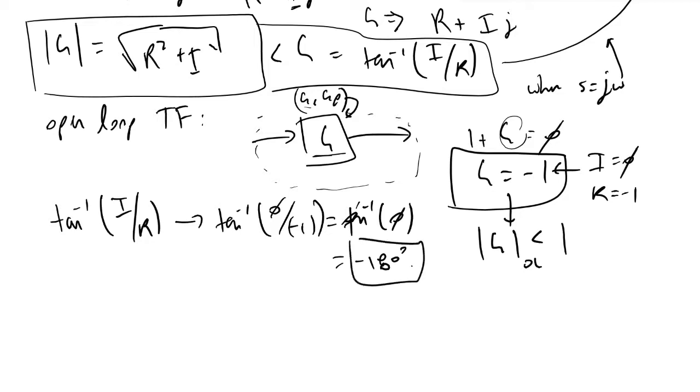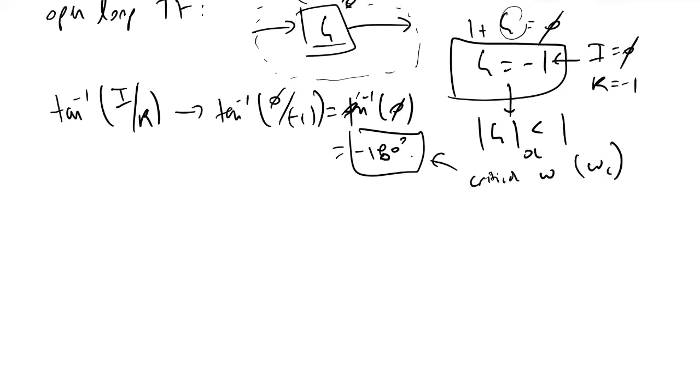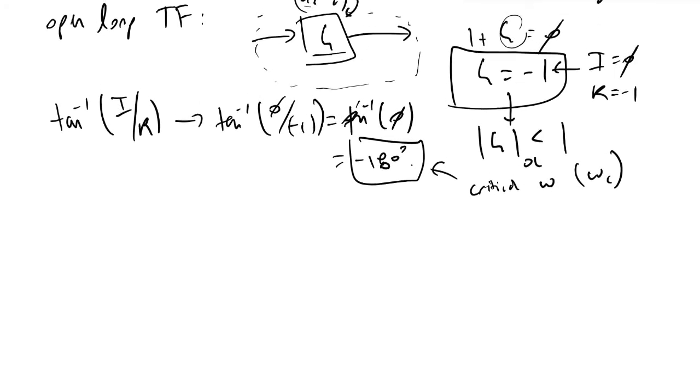This minus 180 degrees is called the critical phase angle, or critical omega, denoted as omega sub c in the textbooks. Now with these two pieces of information, we can begin to ask how do we actually use any of this to determine whether or not a system is stable.